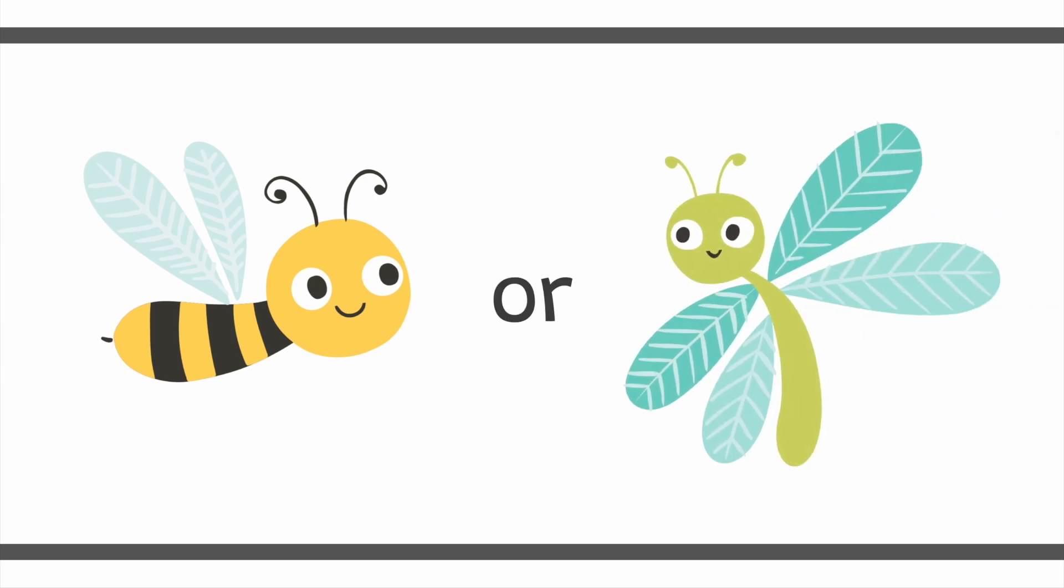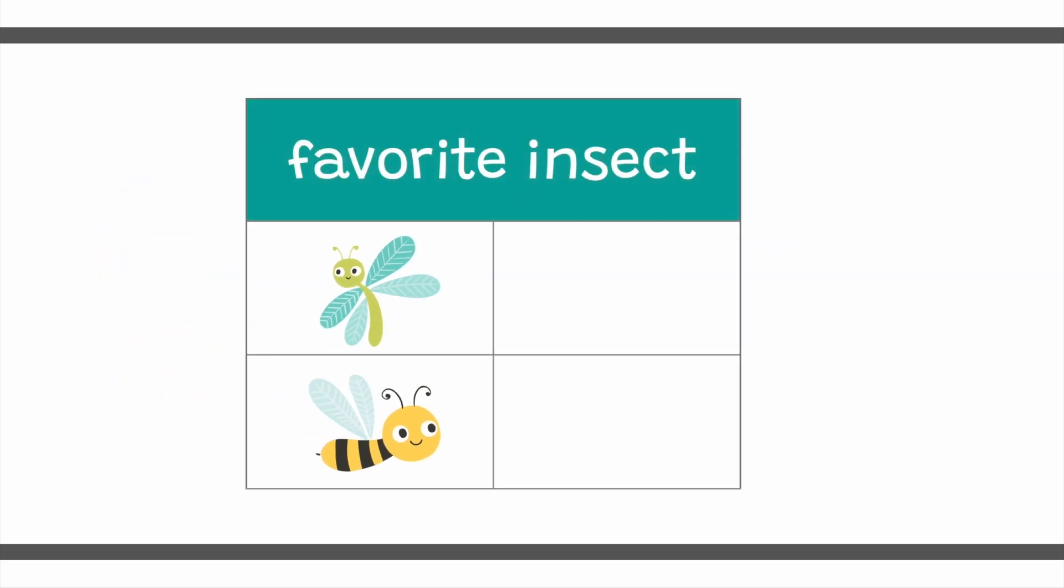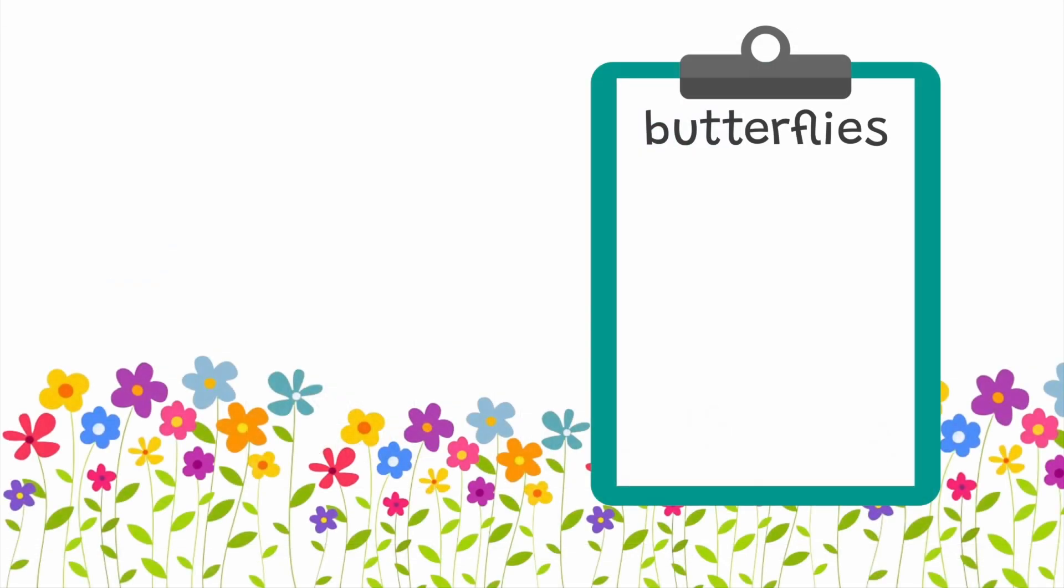Which is your favorite insect, a bumblebee or a dragonfly? Wait, before you answer, let me get my tally chart. If you said dragonfly, one tally mark goes here. If you said bumblebee, then one tally mark goes here. All the votes are in, and here are the tallies. According to this tally chart, more kids prefer dragonflies because dragonflies got more tally marks. Now, let me show you how tally marks work.